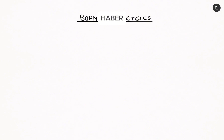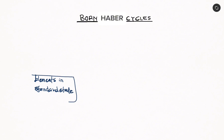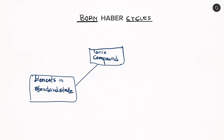So let's say we have elements in their standard states. We can combine them to have an ionic compound. The energy change involved when we have elements in their standard states combining to give us an ionic compound — for example, solid sodium and chlorine as gas — if we have this combining to give us sodium chloride, the energy change involved is what we refer to as the standard enthalpy change of formation.